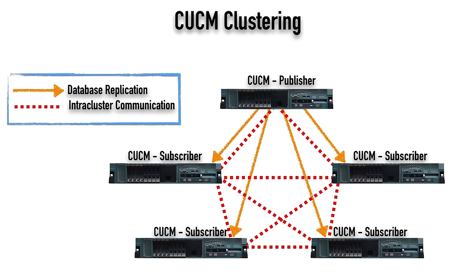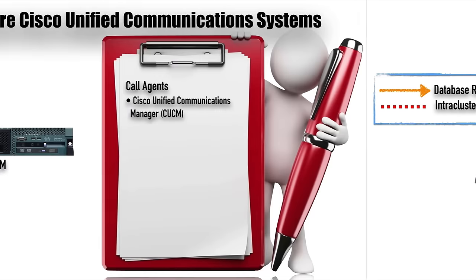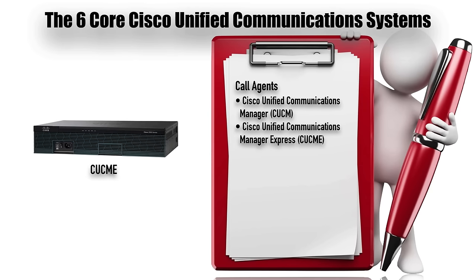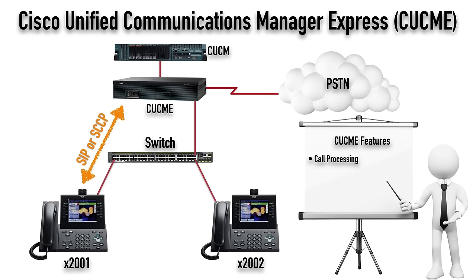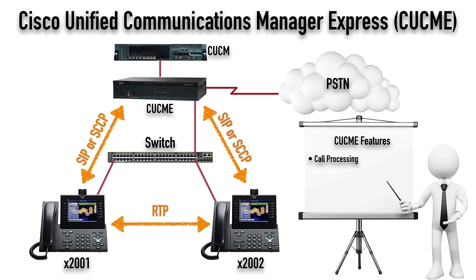Our next call agent is router-based: Cisco Unified Communications Manager Express, or CUCME. We configure a router with an appropriate feature license to act as a call agent. Just like phones register with a Communications Manager server, phones can register with this Communications Manager Express router. It has a similar feature set — call processing using SIP and/or Skinny. When a call is set up between two phones, RTP, the real-time transport protocol, goes directly between the two phones; CUCME does not get involved in that call path.